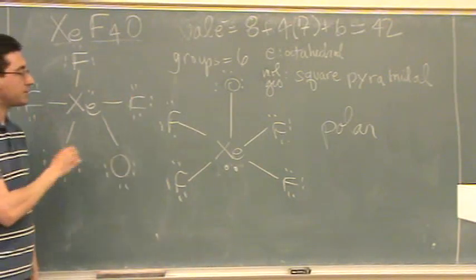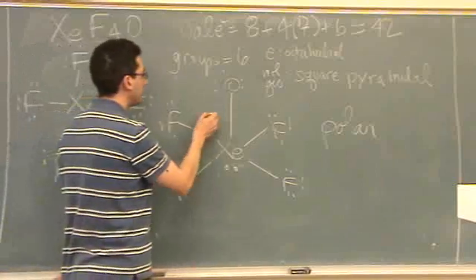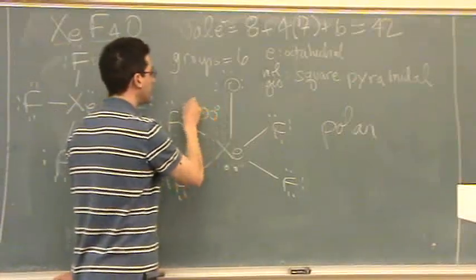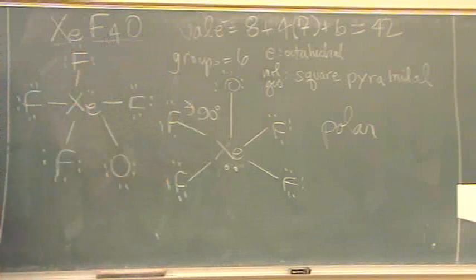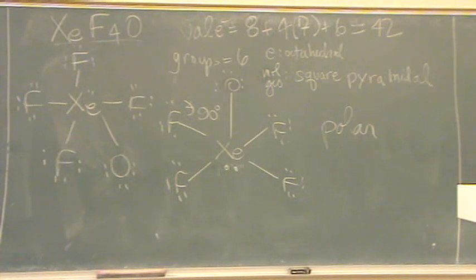Okay. You'd want to do the bond angles, too. What's the bond angle of your octahedral? Ninety. Yeah. These are ninety-degree bond angles. Everywhere.